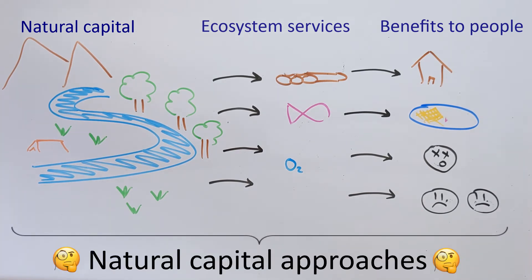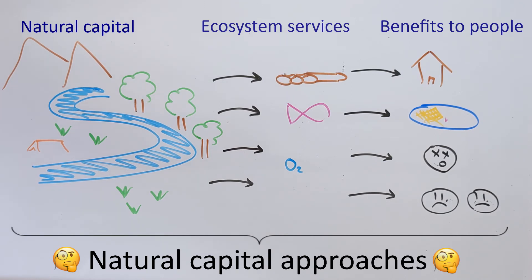Natural capital approaches look to explore how these ecosystems and their benefits are valued by people, including how valuable they are in terms of money. By putting a monetary value on these services, we can start to understand how much it would cost to replace these services if we lost them due to ecosystems being destroyed.